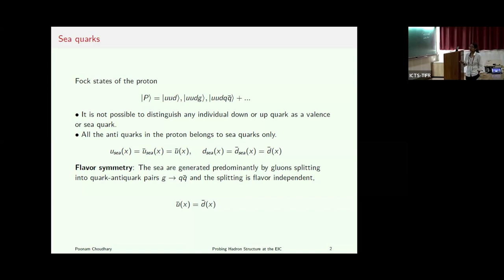In gluon splitting, these quarks appear. The gluon splitting is flavor-independent, and also the mass of U and D quarks is very similar. So it is generally assumed that U-bar is also the same as D-bar. This is known as flavor symmetry. So in the sea sector, all of these distributions are the same.